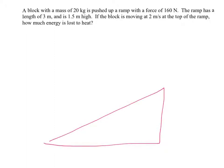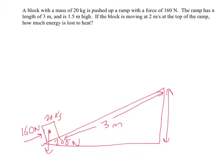Once again, we are pushing a block up this ramp. The block has a mass of 20 kilograms - that's 200 newtons weight. We're pushing it up the ramp with a force of 160. The ramp has a length of 3 meters and a height of 1.5 meters. We're trying to figure out how much energy is lost to heat. So let's do the first thing. How much work is being done on the box?